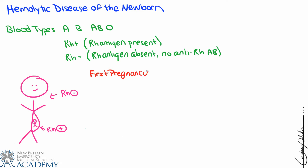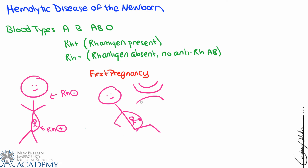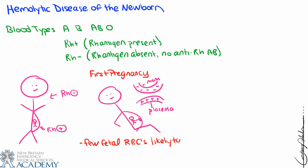We're going to trace the progression of this disease through a first and second pregnancy, in all cases referring only to situations where mom is RH negative and the baby is RH positive. In the first pregnancy, we can see mom and the baby attached through the placenta, which is attached to the uterine wall. An important thing to remember is that even though substances like oxygen, antibodies, and nutrients flow across the placental barrier, the placental circulation and mom's uterine circulation are two distinct circulatory pathways — so the blood generally does not mix.